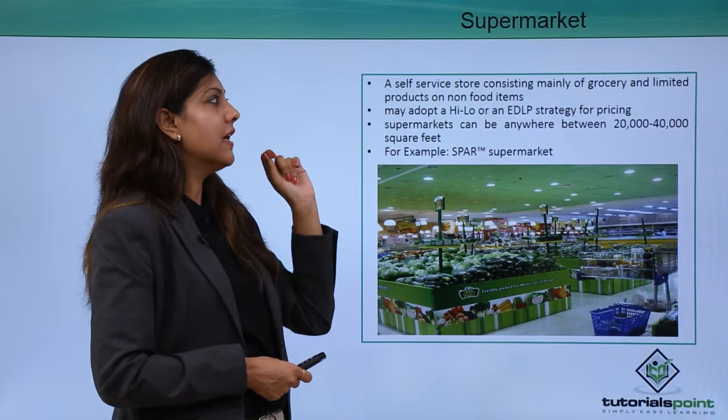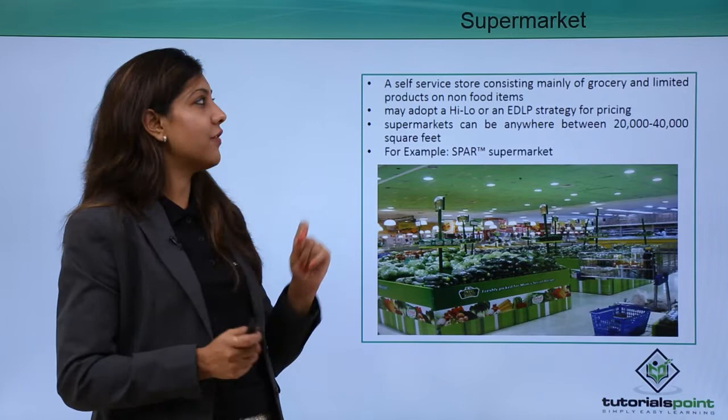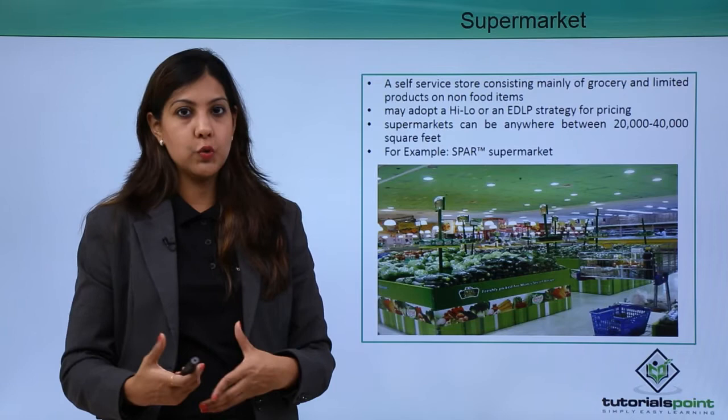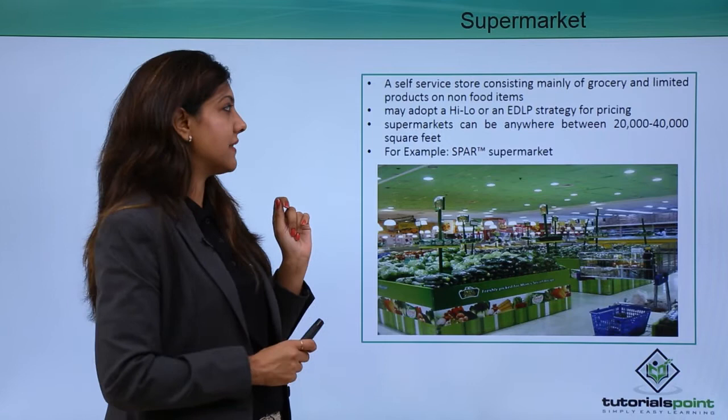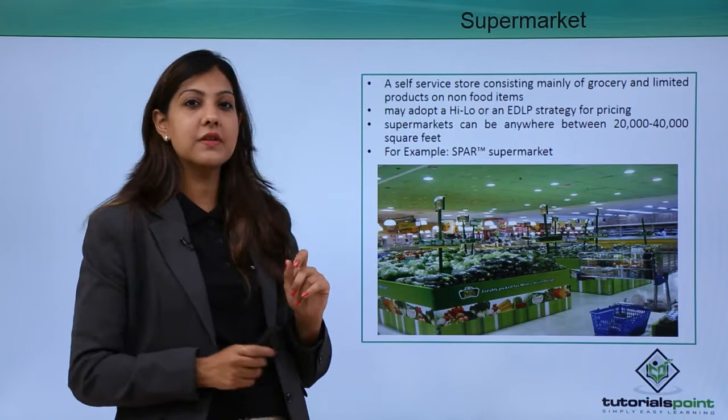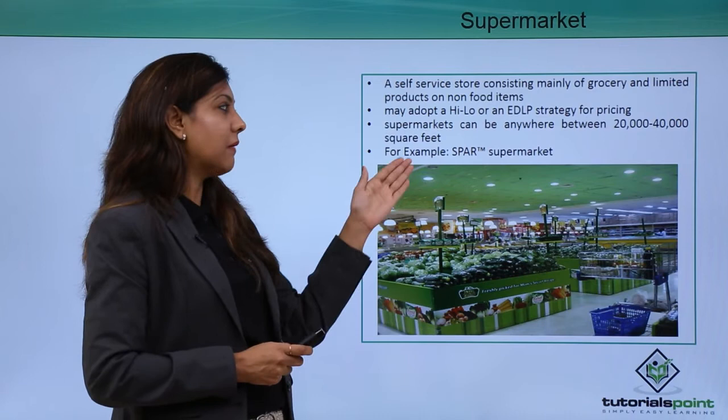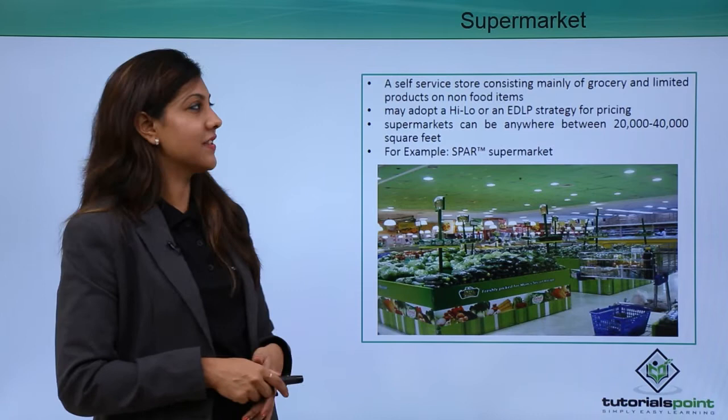A supermarket is a self-service store consisting mainly of groceries and a limited range of non-food items. You won't find clothing, shoes, or accessories here — they cater mostly to food and food-related items. They may adopt a high-low or EDLP pricing strategy and typically range from 20,000 to 40,000 square feet. An example is Spar Supermarket.